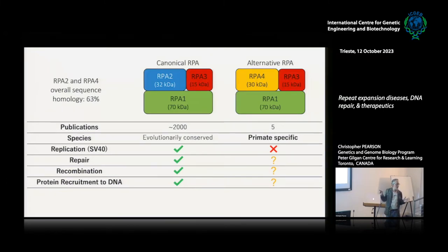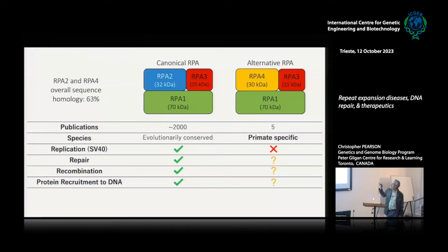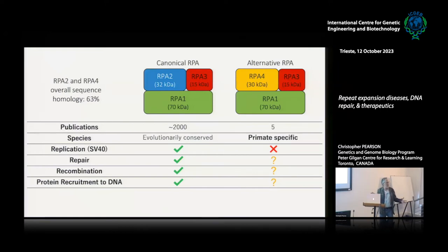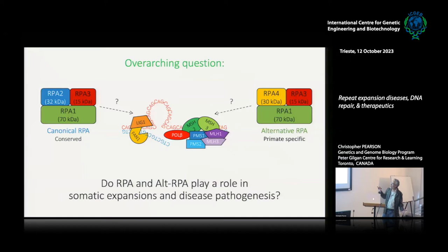In the human genome and in primates, there is another form of RPA. The RNA of RPA2 was inserted into the X chromosome many eons ago and activated as a gene in primates, becoming RPA4. RPA4 makes a protein very similar to RPA2 that can still interact with RPA1 and RPA3, forming a complex called alternative RPA. So there are two forms of single-strand binding protein: canonical RPA and alternative RPA. Only five publications exist on alternative RPA — one discovering the gene, and four basically saying they have no idea what it's doing.